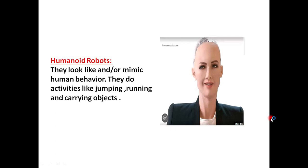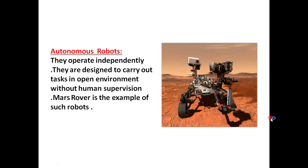Autonomous robots, they operate independently. They are designed to carry out tasks in open environment without human supervision. Mars Rover is an example of such robots. Yahan aap ek robot dekh rahe hain jo ke Mars per hai aur yeh ek aisa robot hai jo independently kaam karta hai.